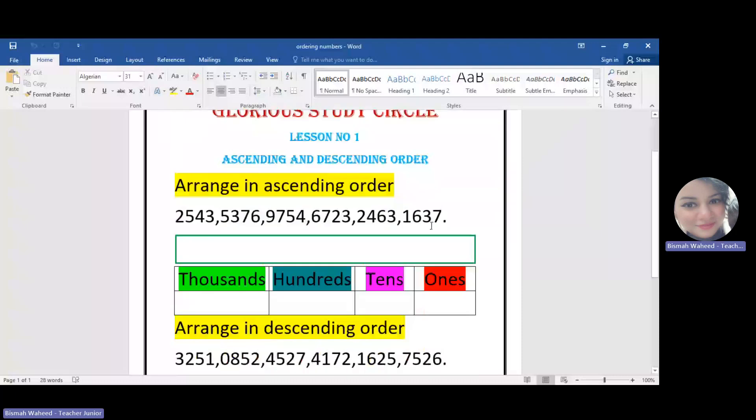For example, if I have to arrange the number in ascending order, I will check the place value of the numbers and then I will decide which number should come first.